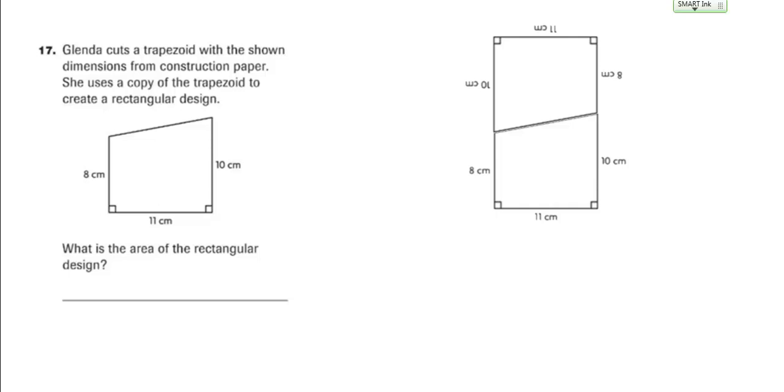Glenda cuts a trapezoid with the shown dimensions from construction paper. She uses a copy of the trapezoid to create a rectangular design.